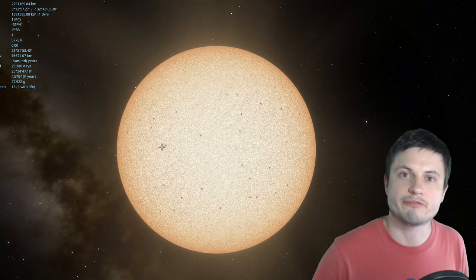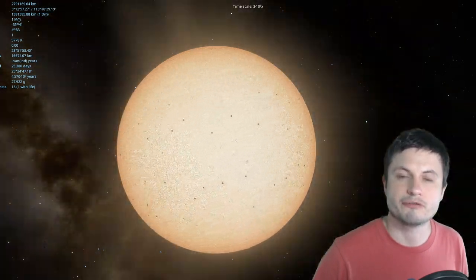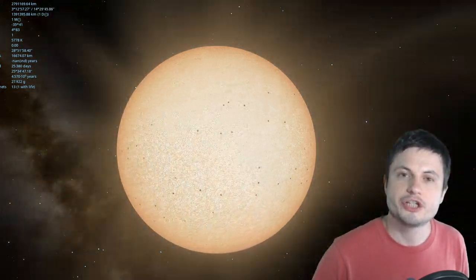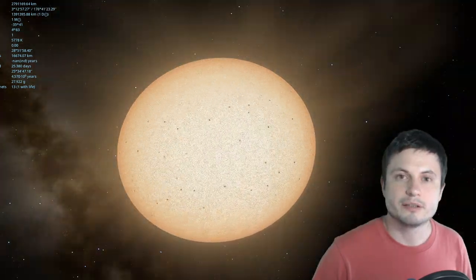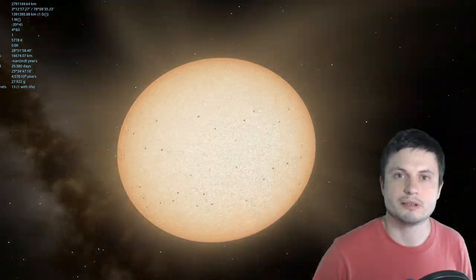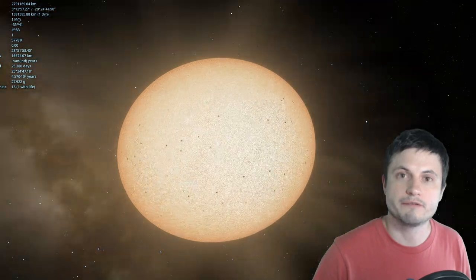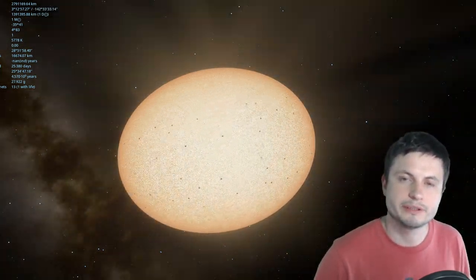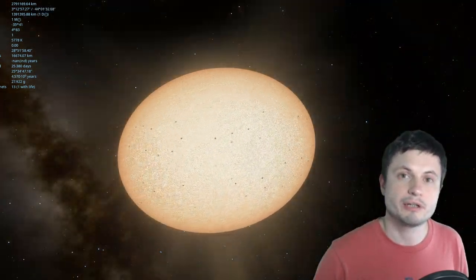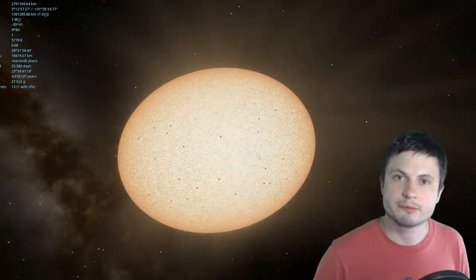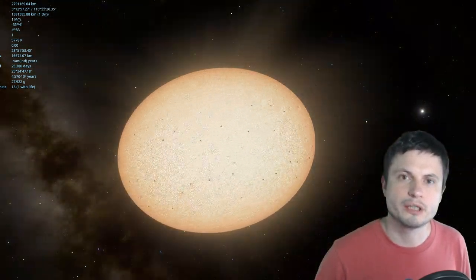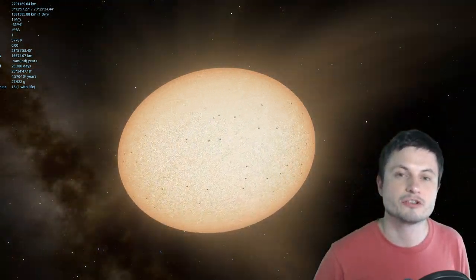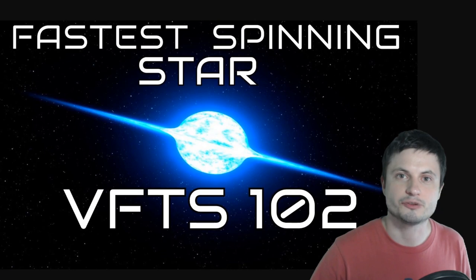However, if our sun was spinning a lot faster, just like Mascara 4, it would then start changing its shape and start becoming a little bit more oblong like you see right here, or even more so, it would basically look like a kind of a disk or, well, technically a potato. And these potato shaped stars are relatively common, and I've talked about one of them a few years ago when I've talked about one of the fastest spinning stars, VFTS-102.